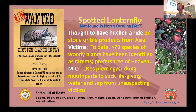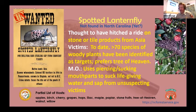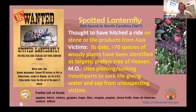The spotted lanternfly is a leafhopper. It has a piercing, sucking mouthpart — it will attach to a tree, poke that piercing part into the tree, and start sucking the sap out. If it takes enough sap out, it's going to affect the health of that tree. Some of the known hosts are apples, birch, cherry, grapes, hops, lilac, maple, poplar, stone fruits, tree of heaven, walnut, and willow — about 70 different species in total.